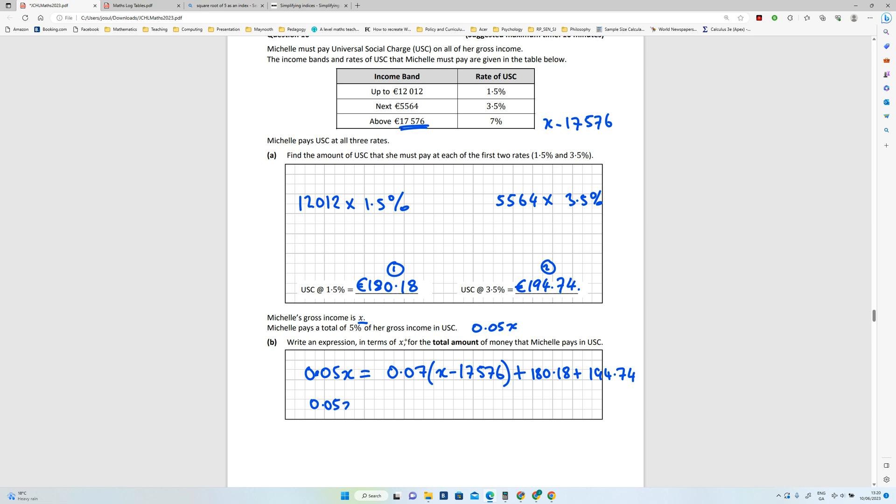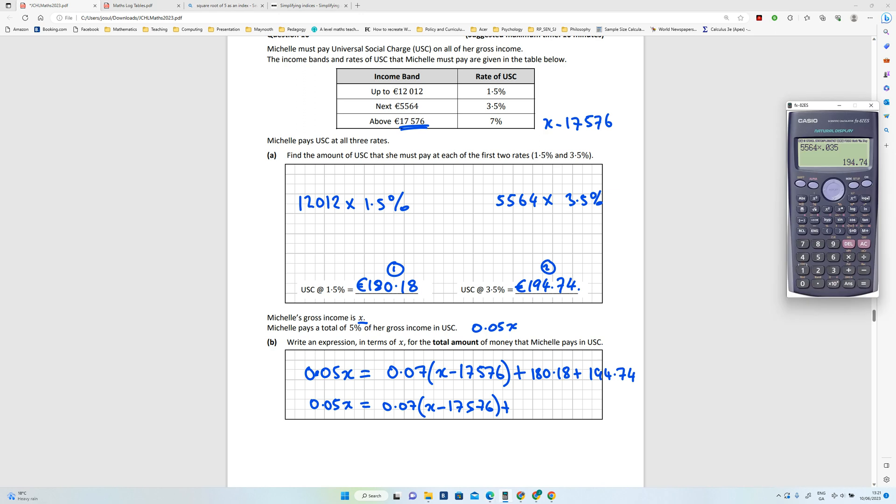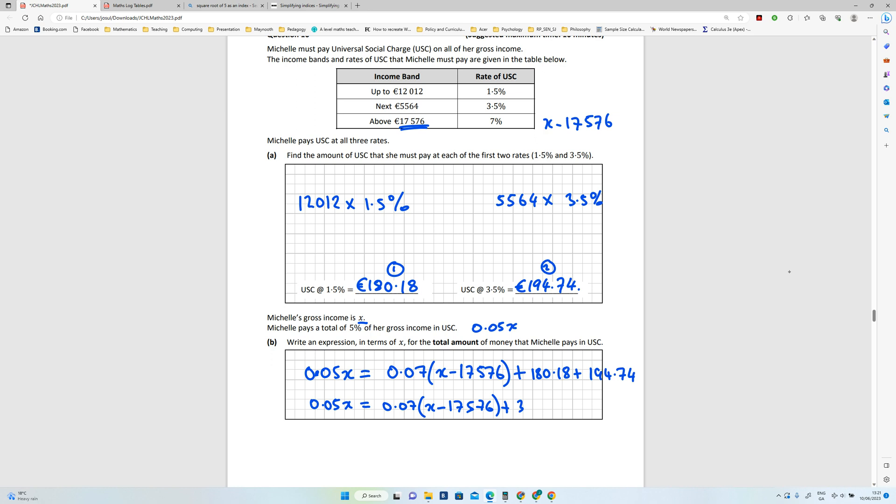Okay, so I'll just write it once more and bring those two numbers together. I'm going to leave this like this for the moment. Plus, let's add those two numbers together, so that's 194 plus 180.18, that gives me 374 and 92 cent. Okay, so that's my way of working it out in terms of X.